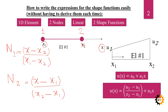For example, re-evaluating N1 by writing the coordinate first: the numerator becomes (x2 minus x) and the denominator becomes (x2 minus x1) evaluated at x1. Both orderings produce the same result because subtracting negatives from both sides leaves the expression unchanged. So it does not matter whether you write x first or the coordinate first. This is how you write shape functions for a linear element, which always has two nodes.